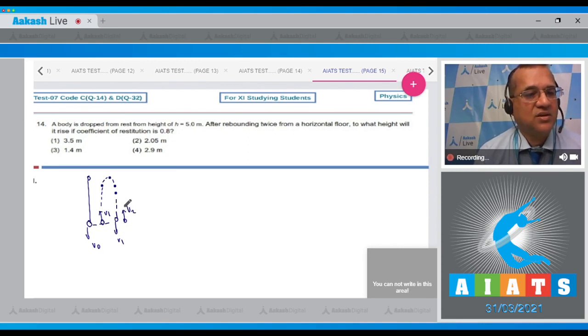Now we want to find out with this velocity how much height it will go. So this height is h₀, this height is h₁, and this height is h₂.